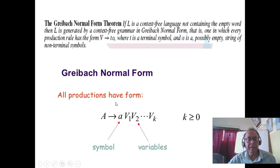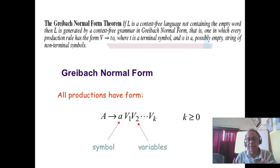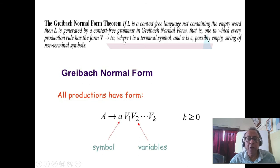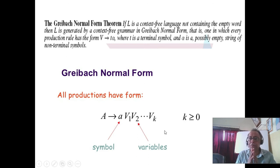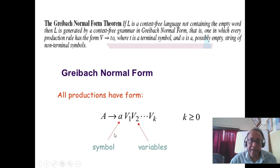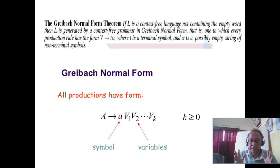Another normal form is Greibach Normal Form — named after Lady Sheila Greibach — and that is also very important. That normal form says every rule should start from a single terminal followed by variables, with no limitation on the number of variables. The left-hand side, as per context-free grammar rules, should be a single variable, and the right-hand side should be a single terminal or a single terminal followed by all variables. This is Greibach Normal Form.